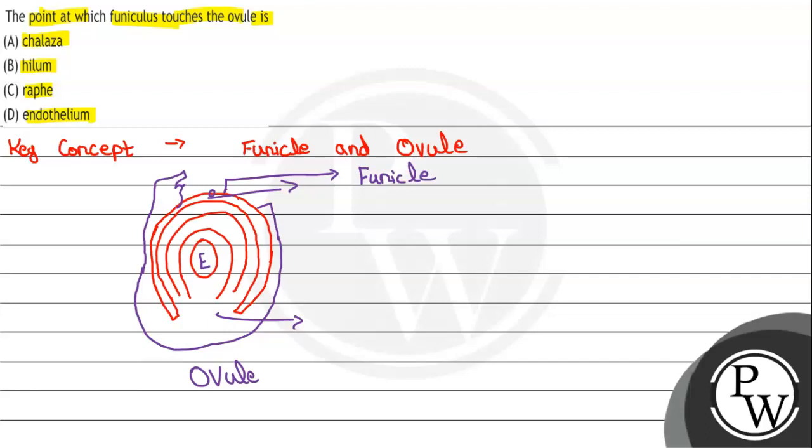The funicle attaches at one point. This point is called the hilum. This is the point of attachment, which we call the hilum.